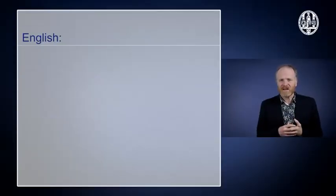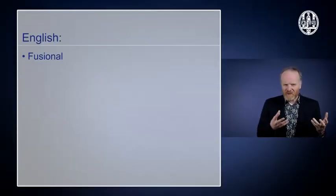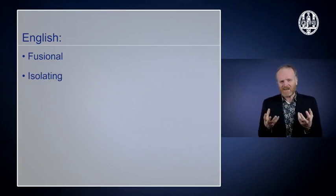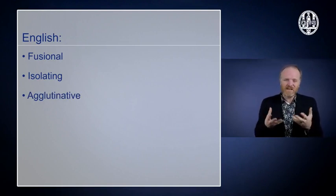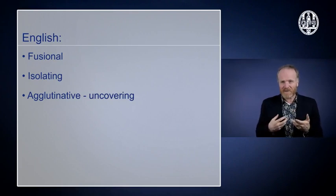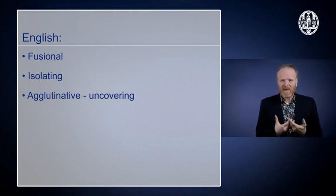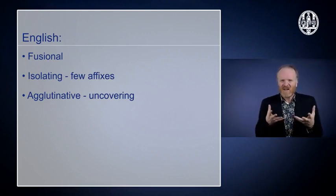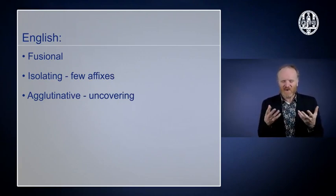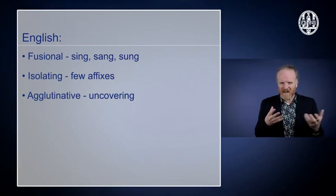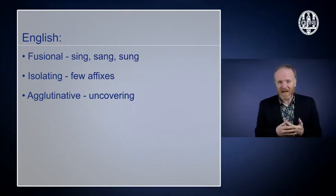Now, it would obviously be great if we could subdivide all languages in the world easily into these classes. But usually it's not that easy. English, for example, seems to be somewhere in between fusional and isolating languages. And actually also something of an agglutinative language. It's a bit agglutinative. We have seen that it has words like uncovering. So it has prefixes, suffixes, it has affixes. But it doesn't have very many and in that respect it's also isolating. And it's even a little bit fusional because it has words like sing, sang, sung. We change the time and we change the vowel, just like in Arabic.